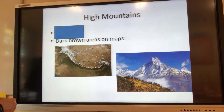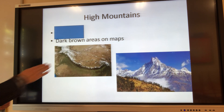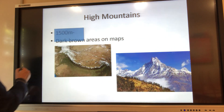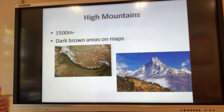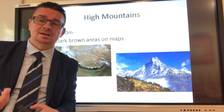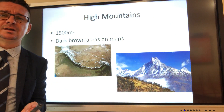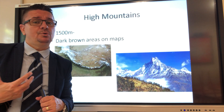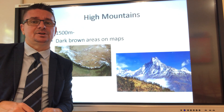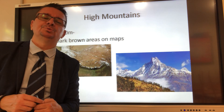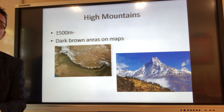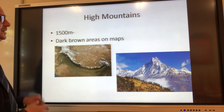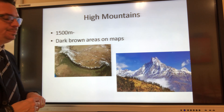Finished? Next one. High mountains is the next one — really dark brown areas on maps. They are really tall — well over 1,500 meters. The tallest ones in the Himalayas, the biggest mountain range system on Earth, can be well over 7,000–8,000 meters. The tallest is Mount Everest, or Chomolungma is the local name — almost 9,000 meters tall.